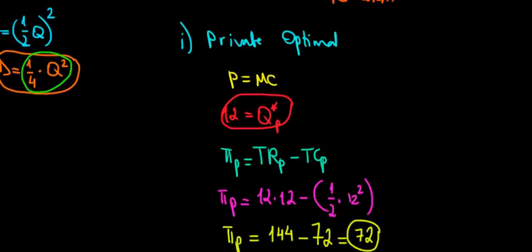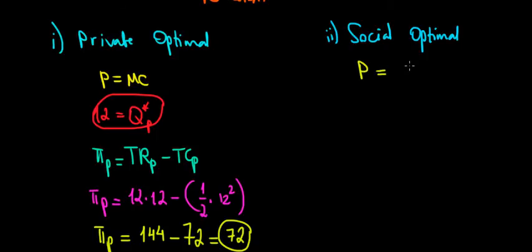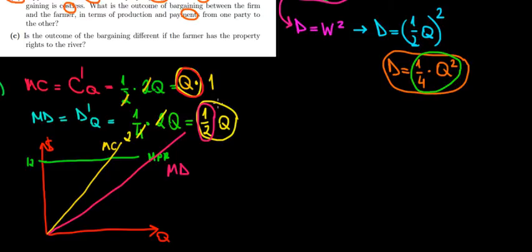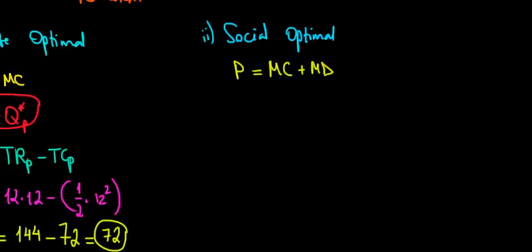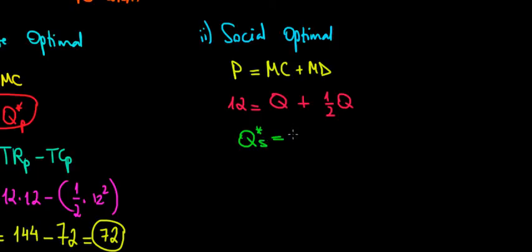Now the same logic applies to finding the social optimal. Under the social optimal level, we also take into account the marginal external cost — the marginal damage — which equals one-half times Q. So the price equals 12, equal to marginal cost Q plus marginal damage one-half Q, meaning the social optimal level of production is equal to 8 units.